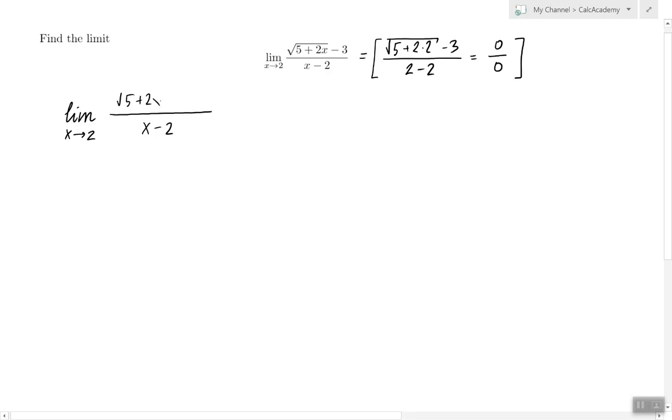We don't see a factor of x minus 2 in the numerator because the numerator is this radical expression, but if we multiply both the numerator and denominator by the conjugate of this radical expression, then we may change the type of the expression in the numerator and hopefully see that invisible factor x minus 2.